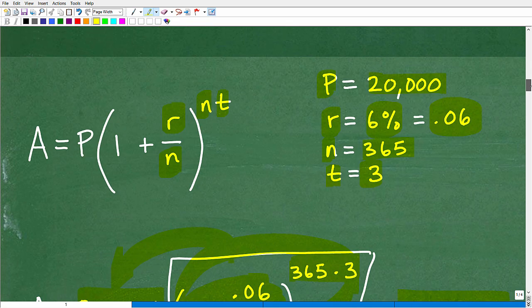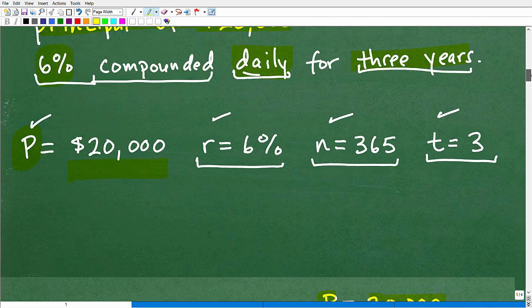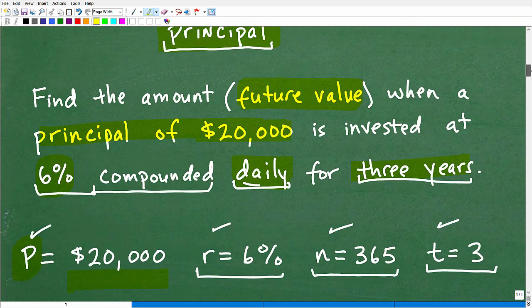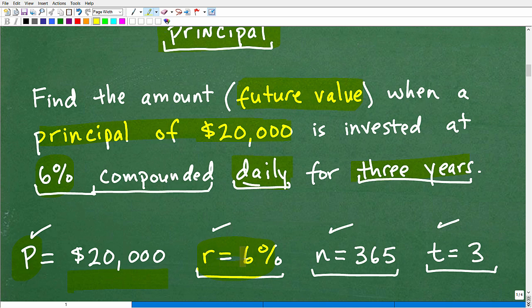Basically, this is it. I think what gets students, if you don't make any math mistakes in terms of changing your percent to decimal, what can get confusing is how many years and how often something's being compounded.